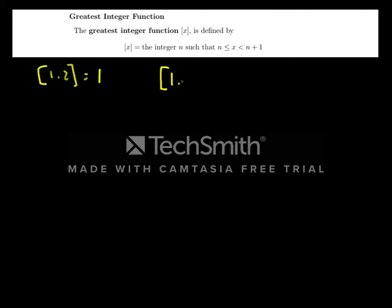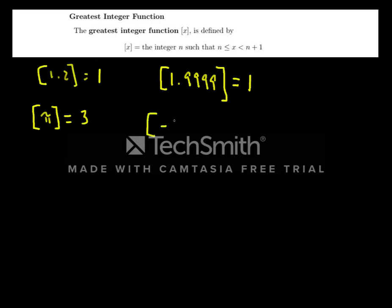The greatest integer of 1.9999 — even though it's very close to 2, since 2 is bigger, it still rounds down to 1. The greatest integer of π is 3, since π ≈ 3.14, and 3 is the largest integer just below it. Negative numbers can be a bit tricky: the greatest integer of −2.1 is −3, not −2, because we always round down. So −3 is the integer just below −2.1.